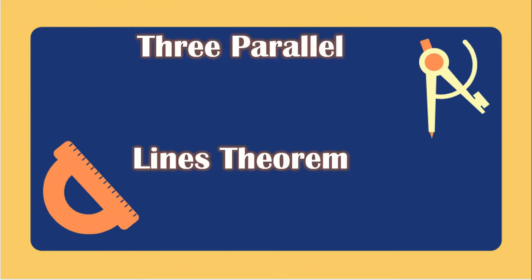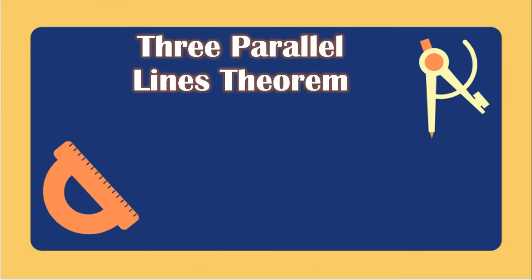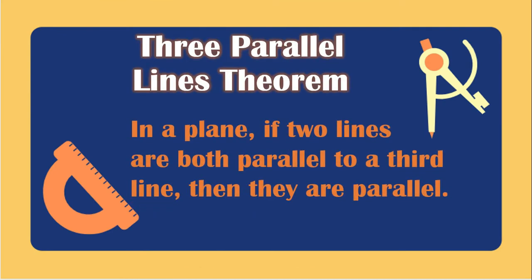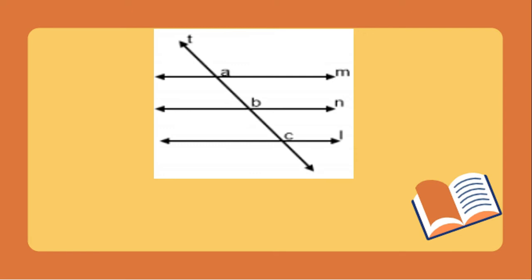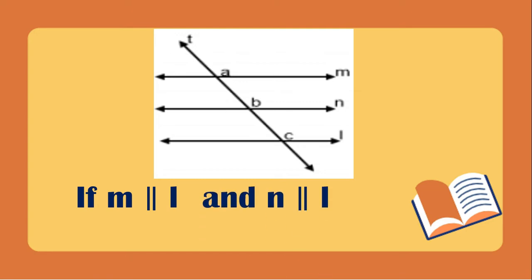The three-parallel lines theorem states: in a plane, if two lines are both parallel to a third line, then they are parallel to each other. Here, if line M is parallel to line L and line N is also parallel to line L, then the conclusion is line M is parallel to line N.